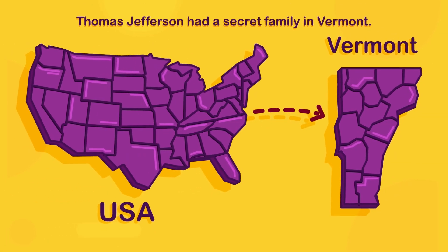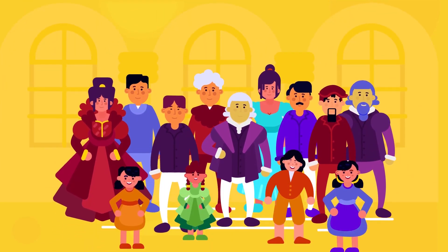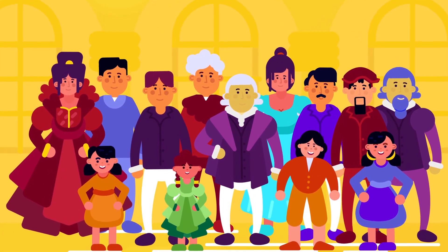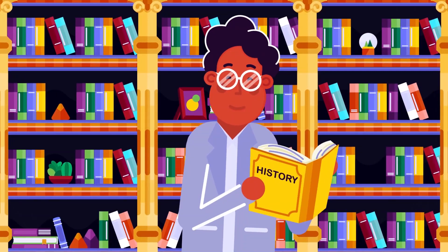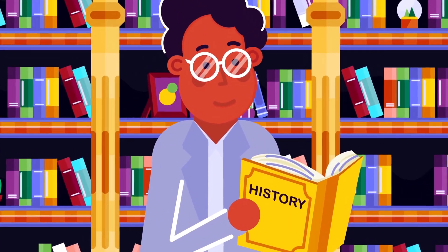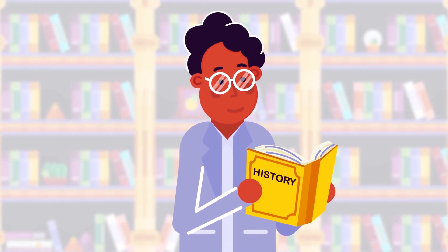The statement 'Thomas Jefferson had a secret family in Vermont' is interesting, but it is not revisionist, since mainstream history can still coexist with this fact. The textbooks do not need to be rewritten.